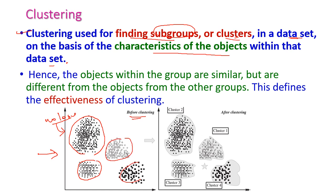The algorithm will find the subgroups based on the characteristics of the objects and group the data accordingly. It will identify the different number of clusters in the given raw data set. The objects within a group are similar to each other, but the objects are different from other groups.